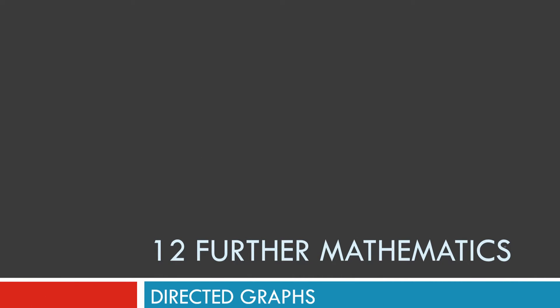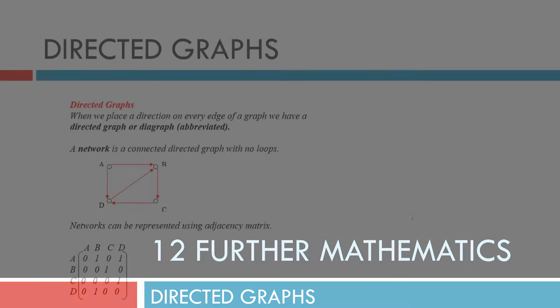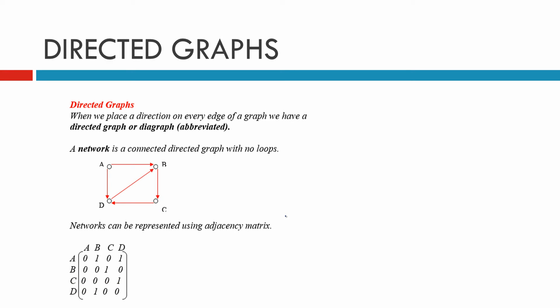Directed graphs. A directed graph is formed when we place an arrow — a direction — on every edge. The abbreviated form is digraph. Remember, a network is a connected directed graph with no loops. It doesn't have to be directed, but now we're talking about directed graphs, so be aware of that.